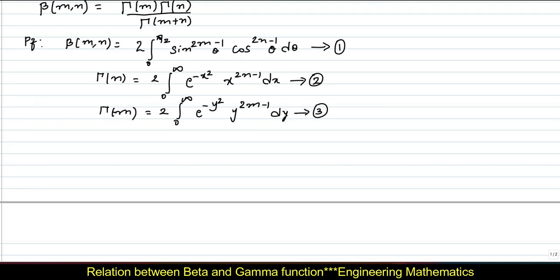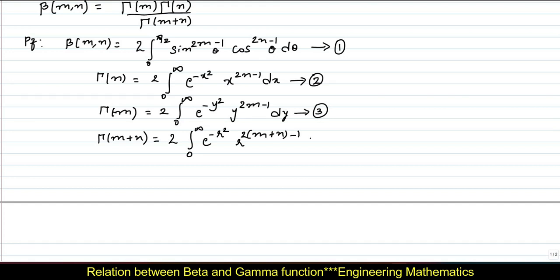Next, gamma of m plus n is defined as 2 times of integral from 0 to infinity of e power minus r square into r power 2 times of m plus n minus 1 dr. I will name this as equation 4.